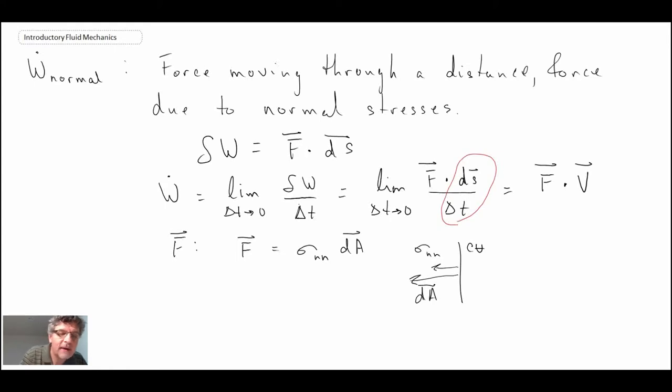With that for the force and with that for the work, what we can do is rewrite this for normal as being an integral over the control surface. I'm going to flip the dA and the V around. It's a dot product, so it doesn't matter the order. It'll make sense shortly why I'm doing that flip. We still have our normal stress multiplied by V·dA. That is normal work.